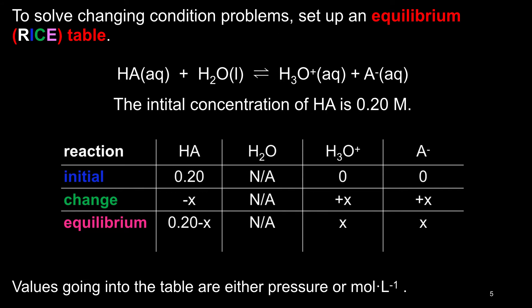Note, the coefficient of the species in the balanced reaction becomes the coefficient of X in the table. This is why it is so important to write the coefficients in the top line.